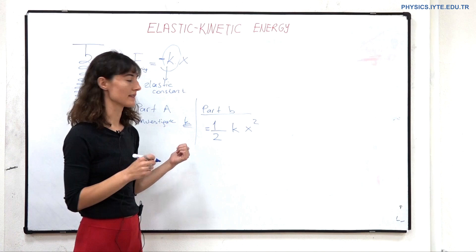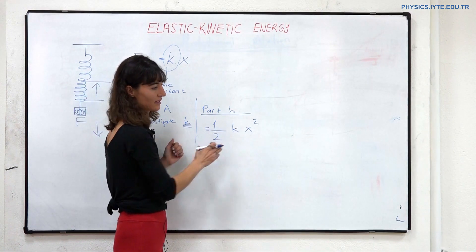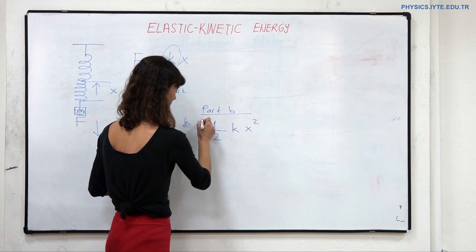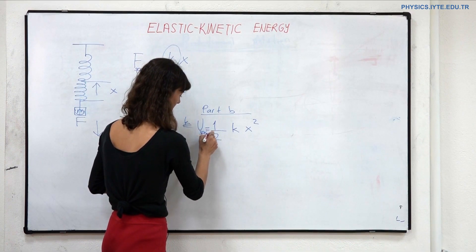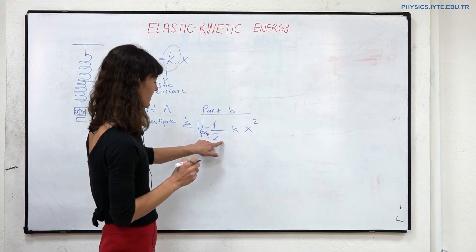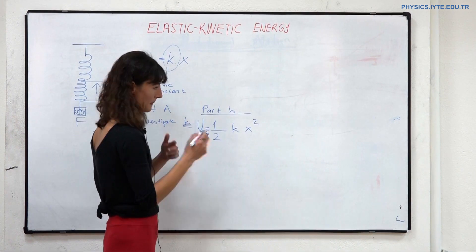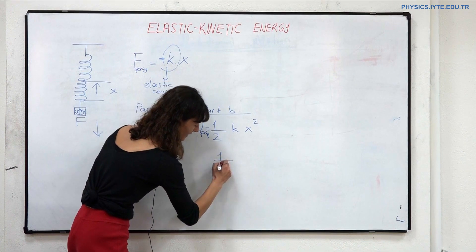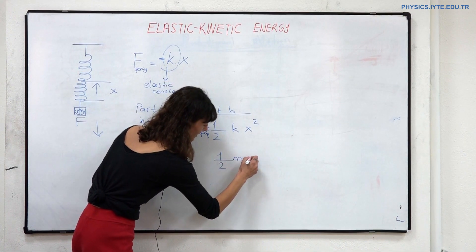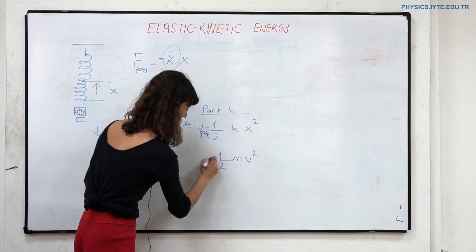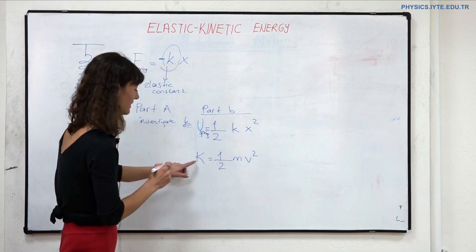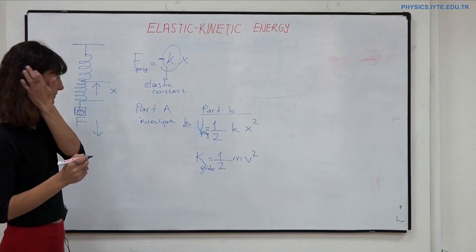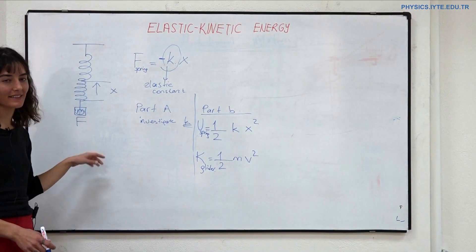This is also the kinetic energy that the spring can give to an object — let's call it the full spring energy. We can convert that energy to kinetic energy of a glider, which is one-half m times velocity squared. Let's call it the kinetic energy of the glider we will use in the experiment.